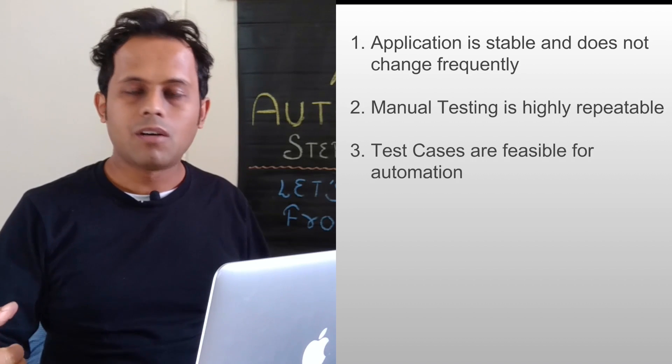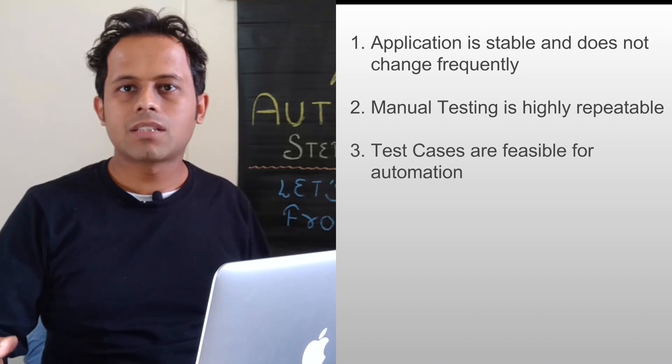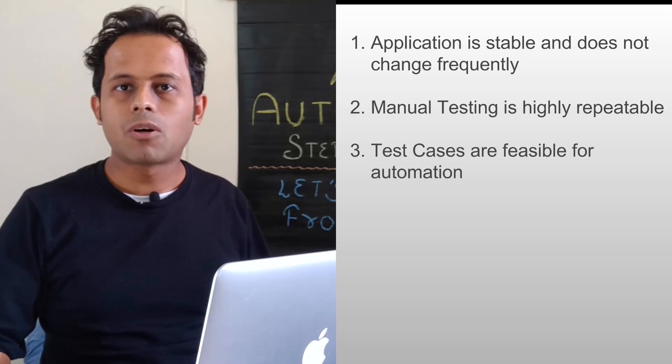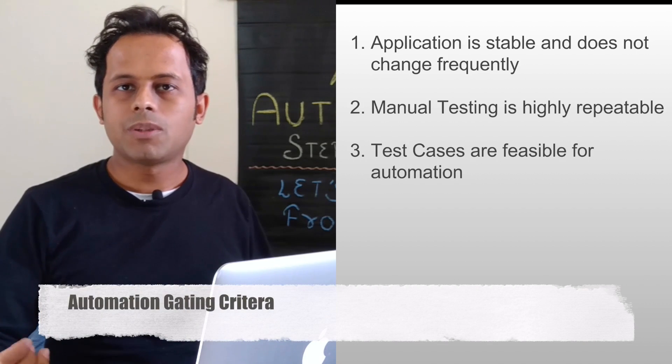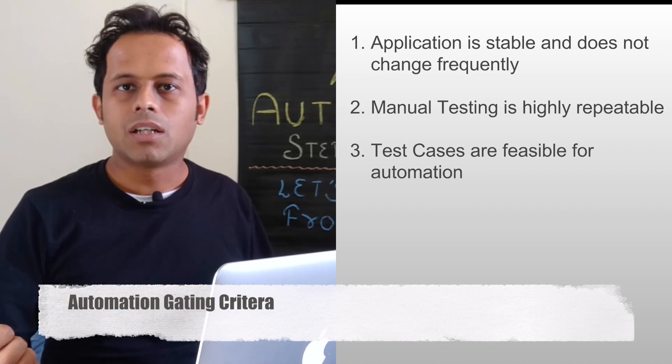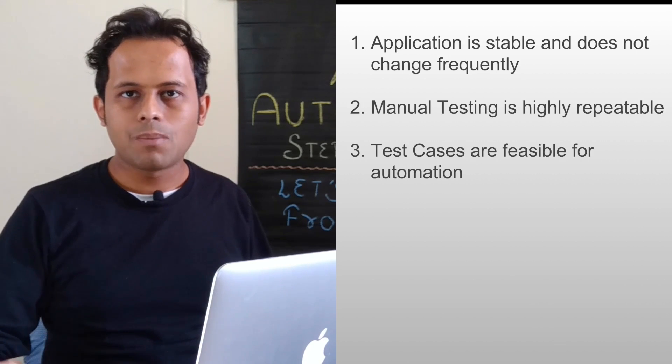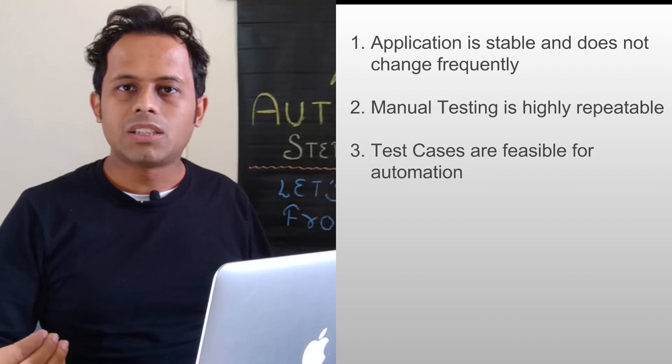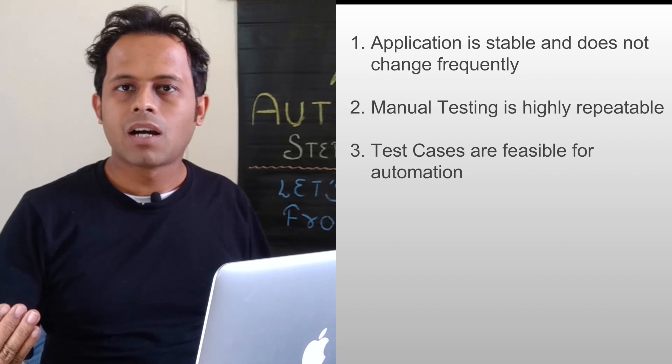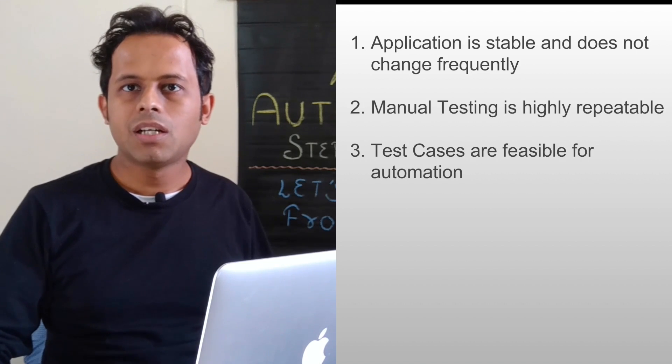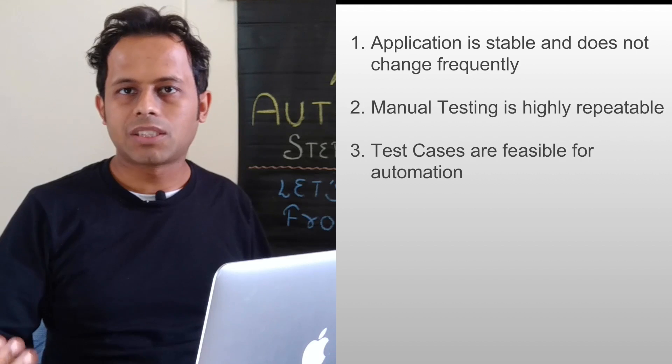The third one is we always check whether the test cases or the scenarios are feasible for automation. There is a term called as automation gating criteria. Now the automation gating criteria is actually a list of some checkpoints that we run on the application or on the manual test cases to check whether these test cases or the steps inside the test cases are good candidate for automation. I will have a separate session where I will discuss about the checkpoints on automation gating criteria.